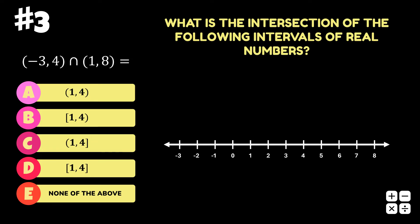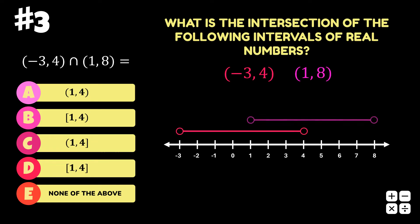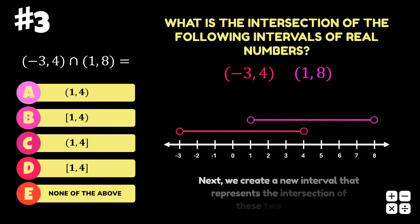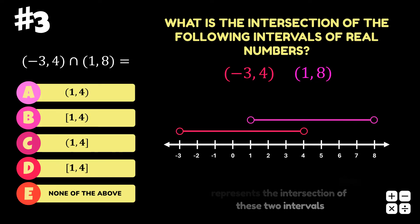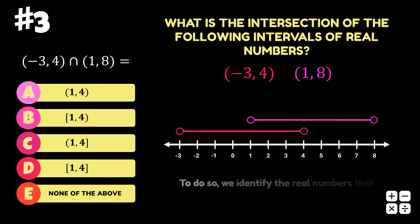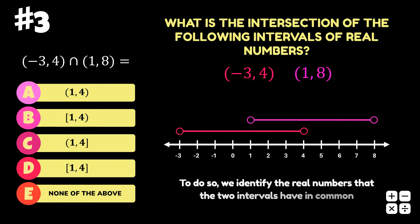We begin by illustrating the two intervals on a number line, as shown here. Next, we create a new interval that represents the intersection of these two intervals. To do so, we identify the real numbers that the two intervals have in common, that is, the real numbers that are present in both intervals.